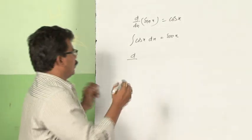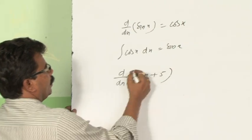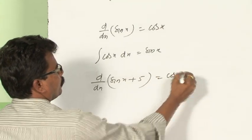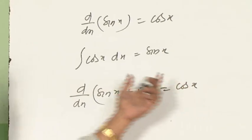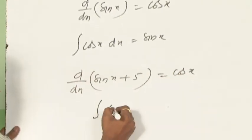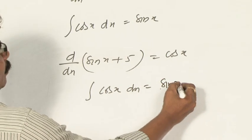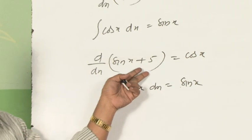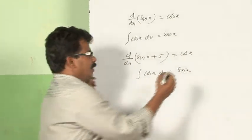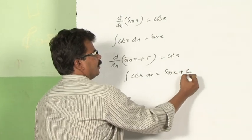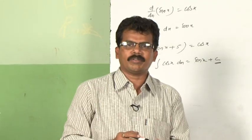Now, d by dx of sin x plus 5 is also cos x. So the integral of cos x should give sin x plus 5, but we are getting only sin x — some constant is missing. That we write as c, which is an arbitrary constant, also known as the constant of integration.